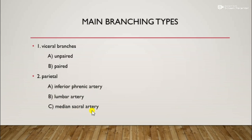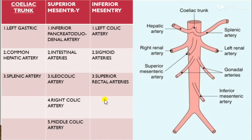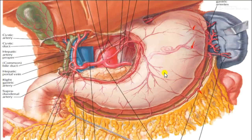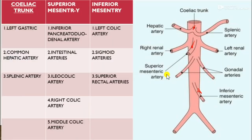The unpaired branches are three great arteries: the celiac trunk, the superior mesenteric artery, and the inferior mesenteric artery. The paired visceral branches are the right and left renal arteries and the gonadal arteries, meaning testicular or ovarian arteries.